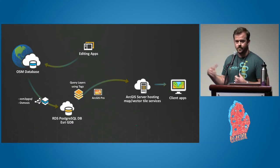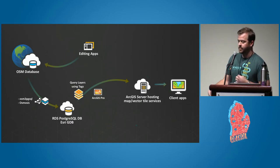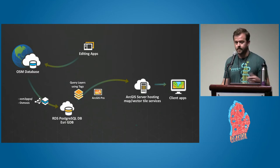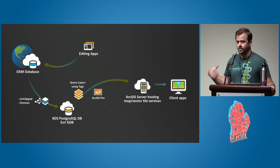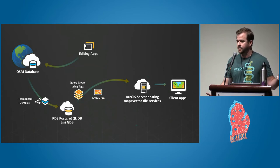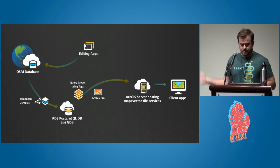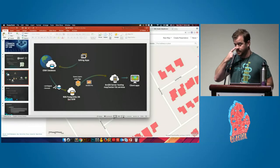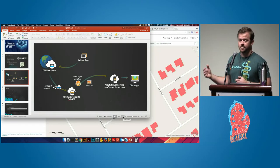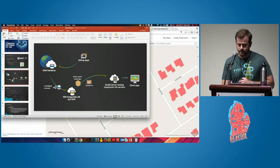From there, we're using ArcGIS Pro — our new flagship desktop software — using what we call query layers, which are just SQL queries, to get thematic layers like buildings, roads, and parks. We then publish to ArcGIS Server, our enterprise web service software. These are RESTful services, so anything that can consume a REST service or query it and parse the JSON response and geometries — anybody can handle that.